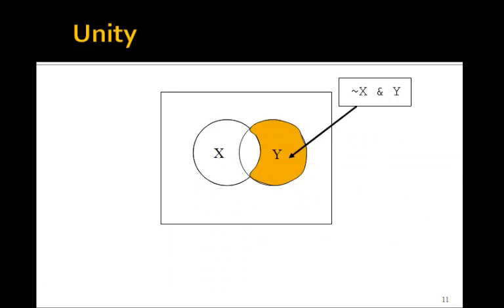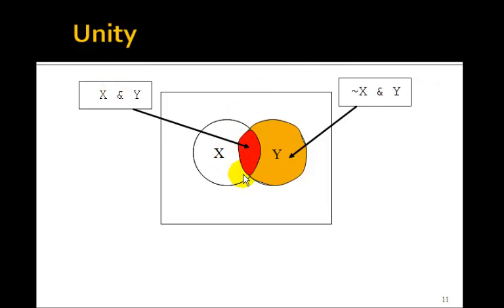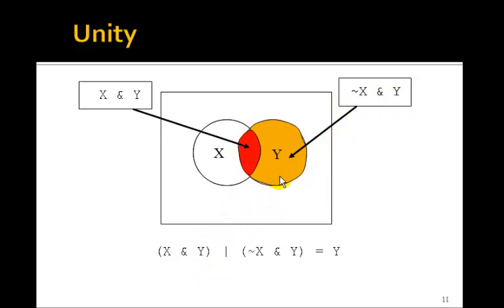Let's look at the unity theorem. Here's NOT x AND y, and the red area was x AND y — that little football area. What happens if we OR these two together? You're just going to get y — this is all of y. So x AND y OR'd with NOT x AND y must be equal to y. This is called the unity theorem.